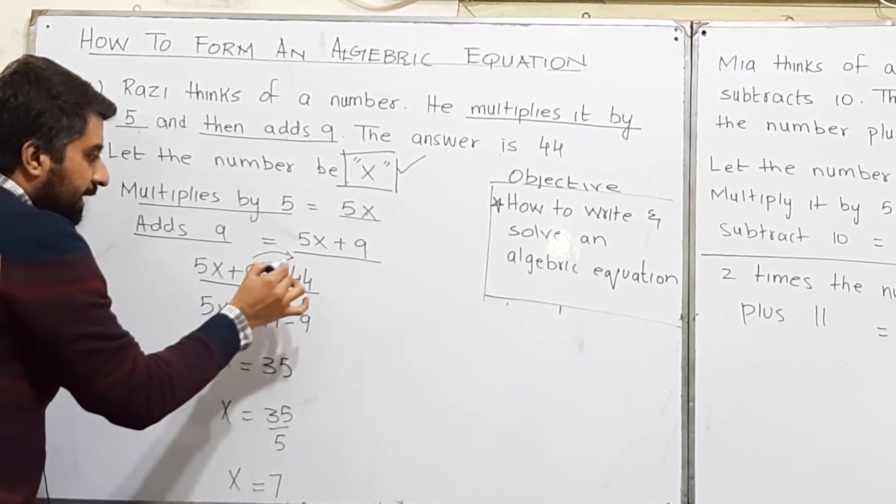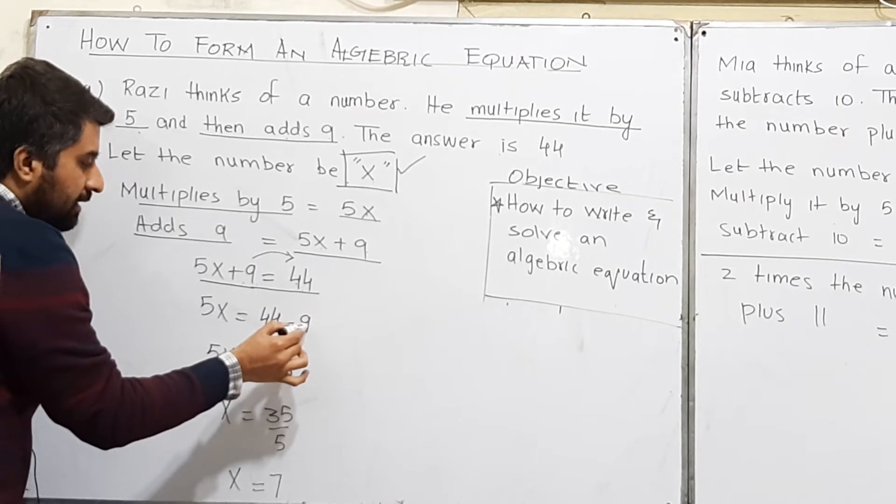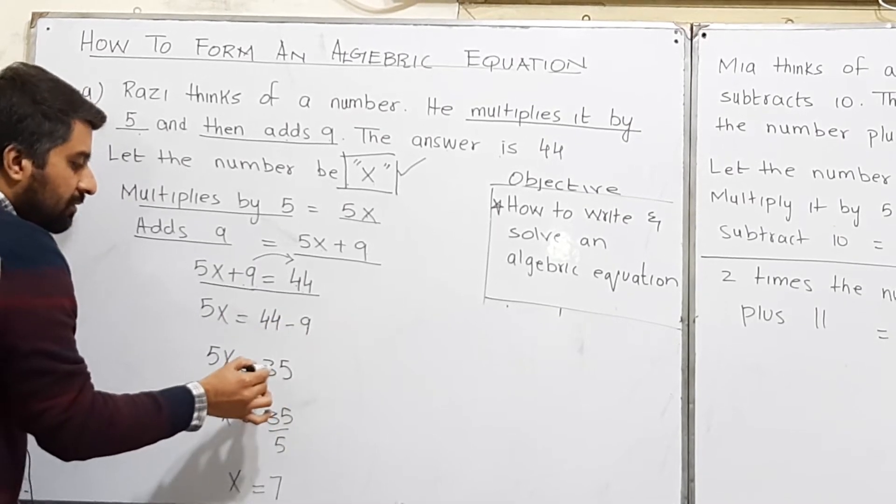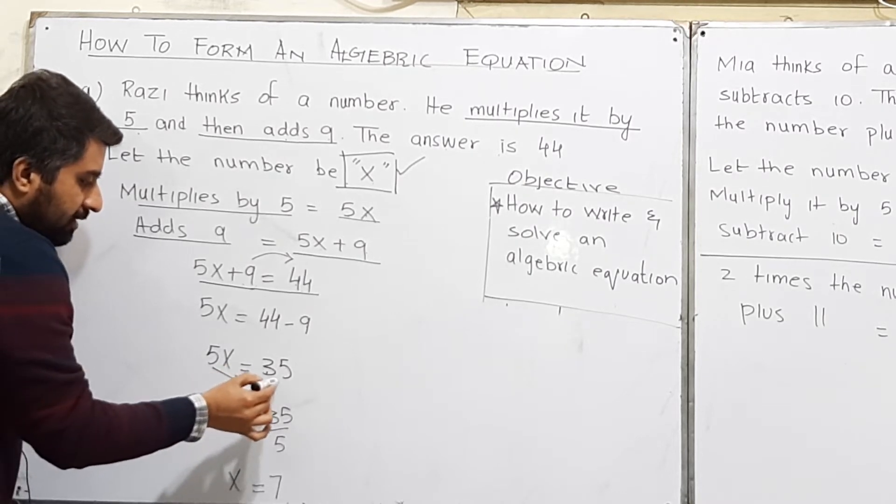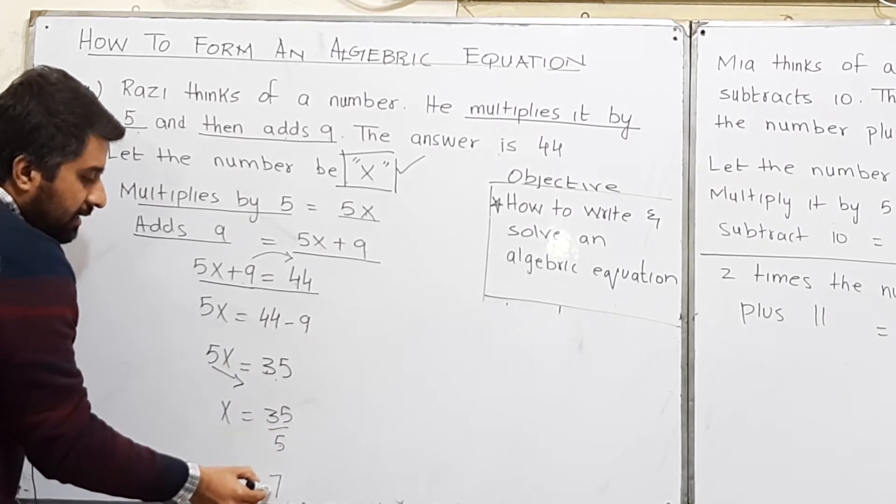From here, 9 will be going on the right side. 44 minus 9 is 35. 5x is equal to 35. 5 will be going on the right side, 35 over 5 is 7.